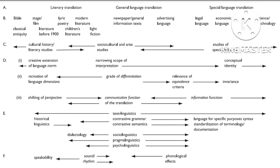Level D covers the translation process, including: number one, understanding the function of the source text; number two, the target text focus; and number three, the communicative function of the target text.